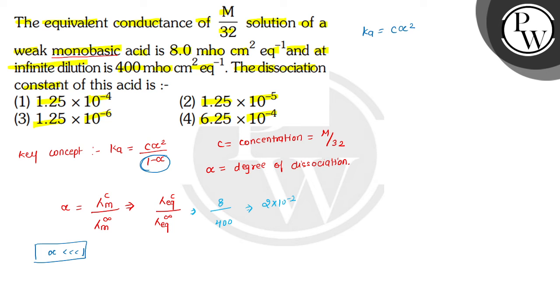Now we have the value of concentration as well as alpha. So we can substitute: concentration is 1/32 multiplied by the degree of dissociation 2 × 10⁻² squared. From here, Ka = 1.25 × 10⁻⁵.